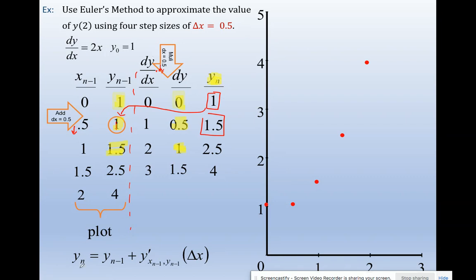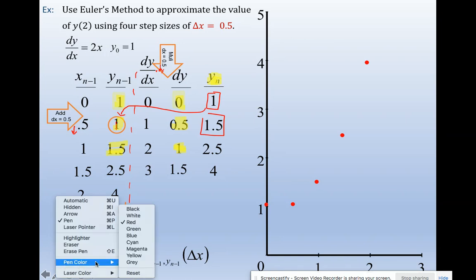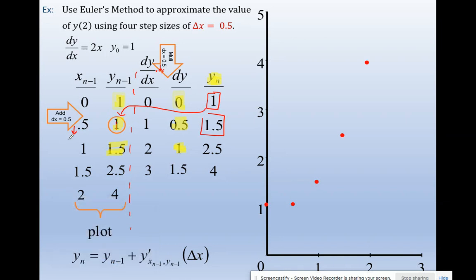Go back over to this column, add delta x, copy over your new y, lather rinse repeat. They asked me to do four steps. So this was the original, this was my fact. I used Euler to get one, two, three, four approximations.